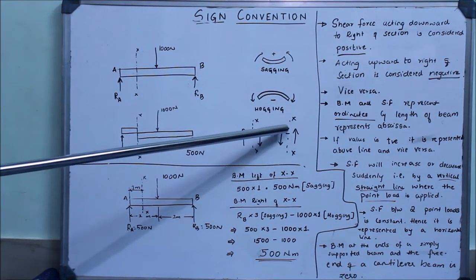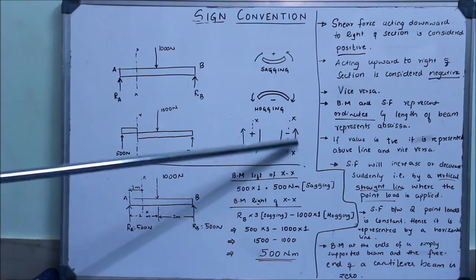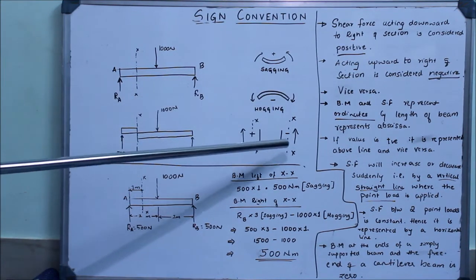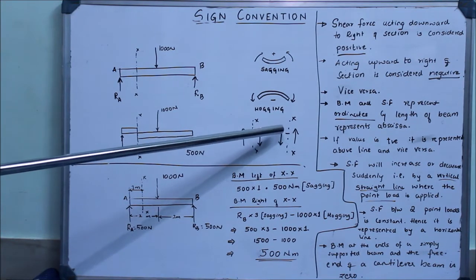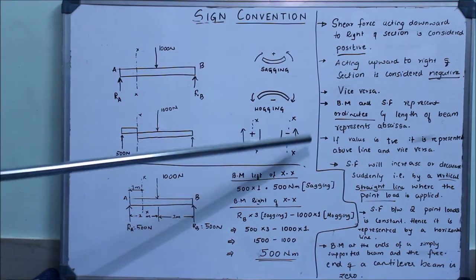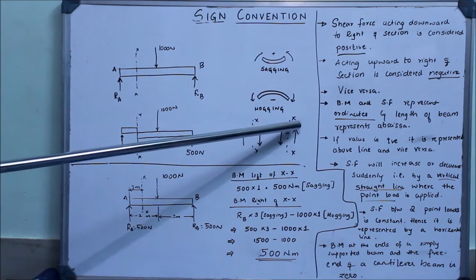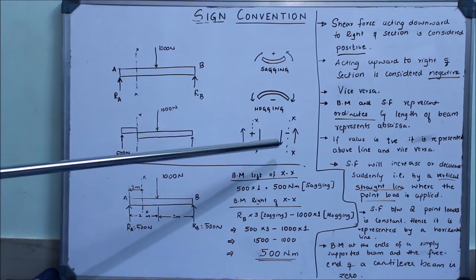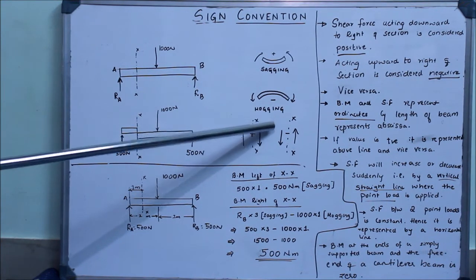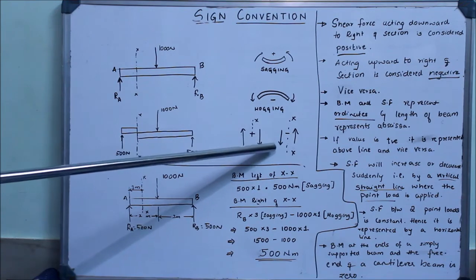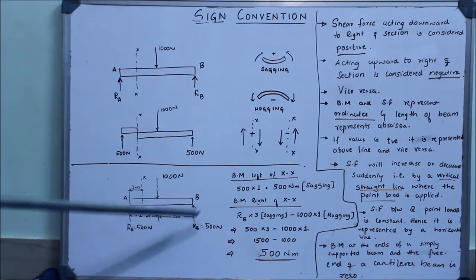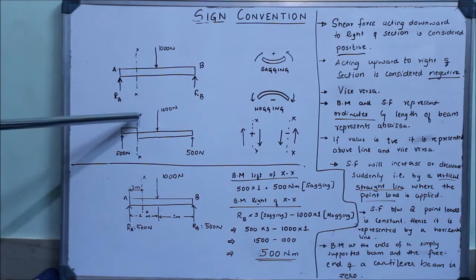If you take the forces acting to the right of the section and they are acting upward, then you consider them as negative. And if you consider the forces to the left of the section and they are acting downward, you take them as negative. Don't get too confused here — just come to this example which I am talking about.